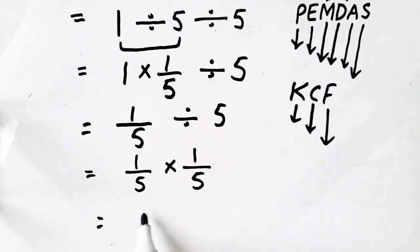So, 1 multiplied by 1 is equal to 1, and 5 multiplied by 5 is equal to 25. Which is your required answer. Thank you.